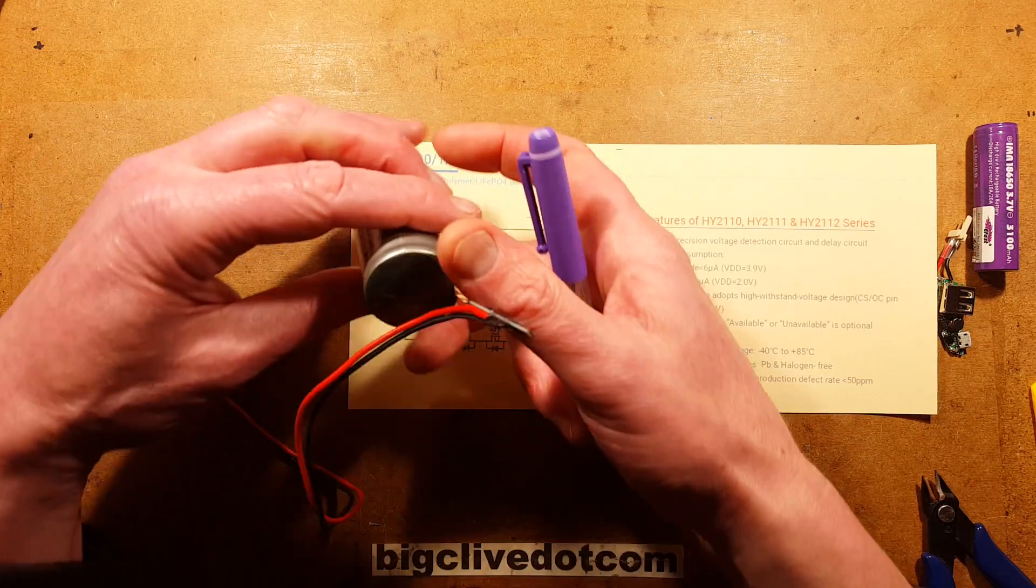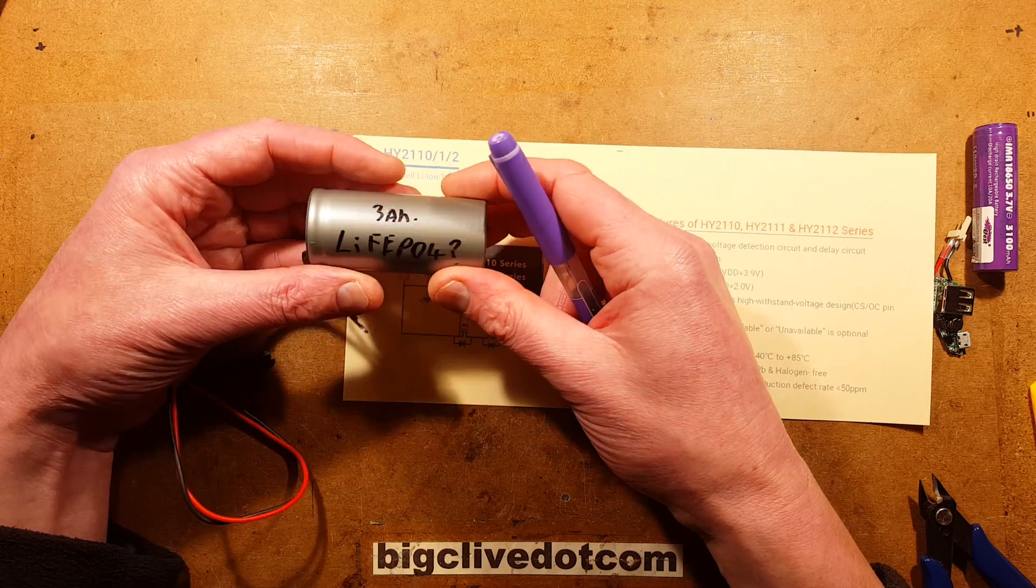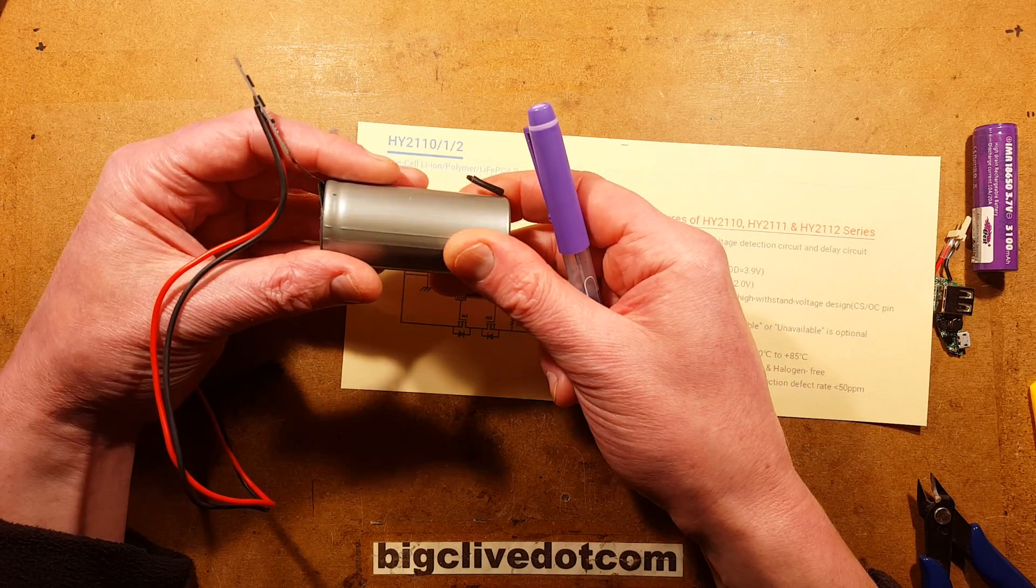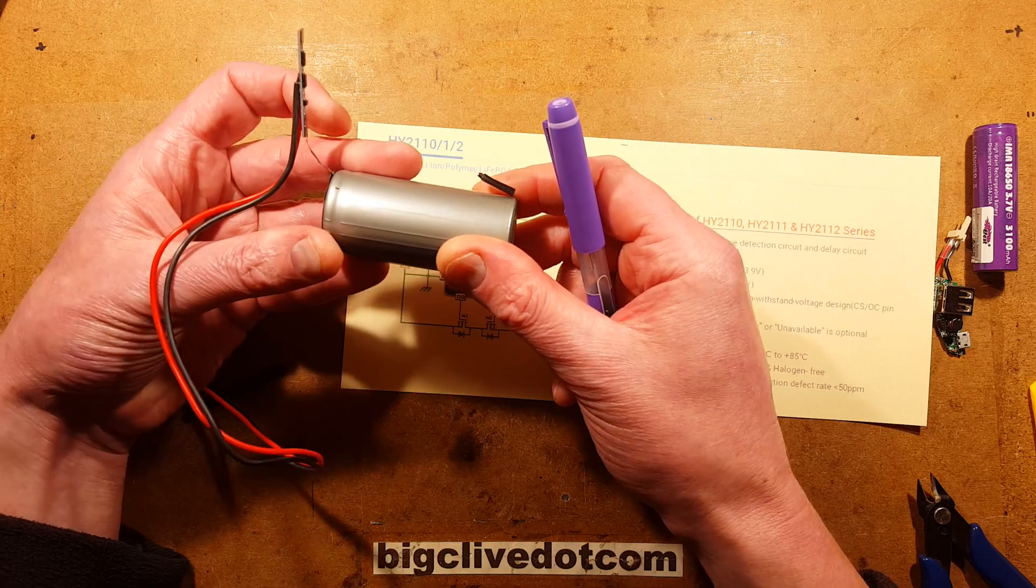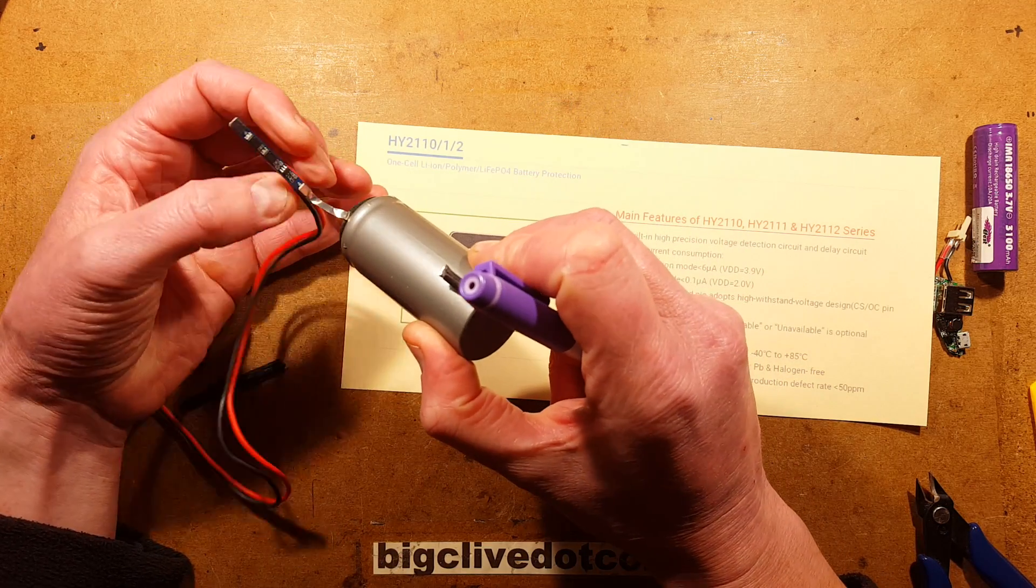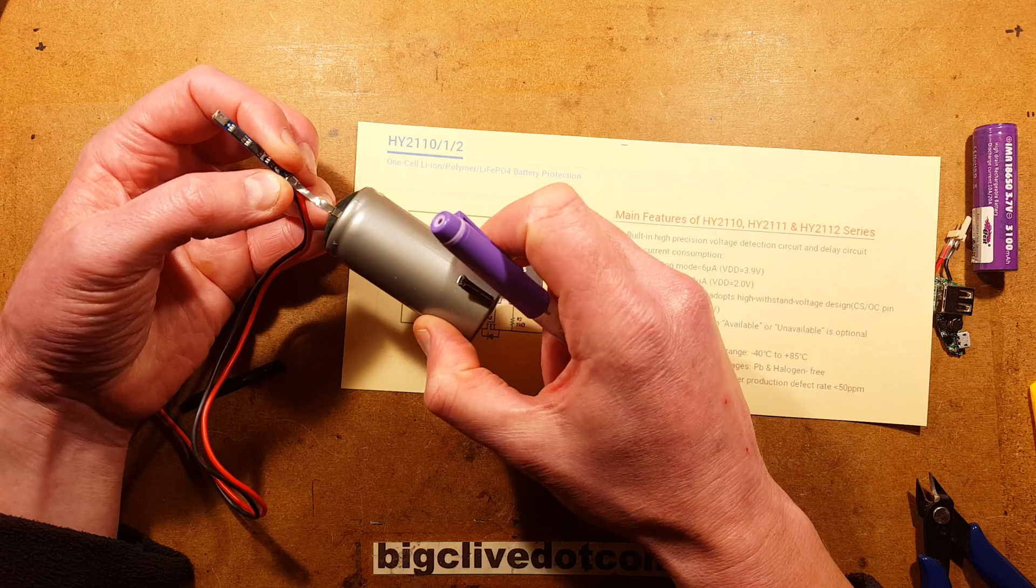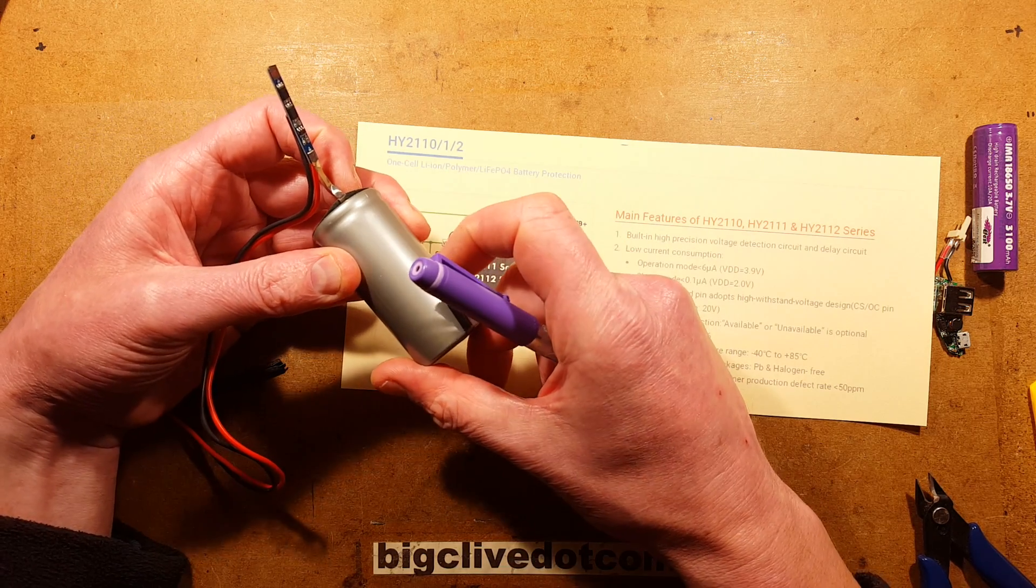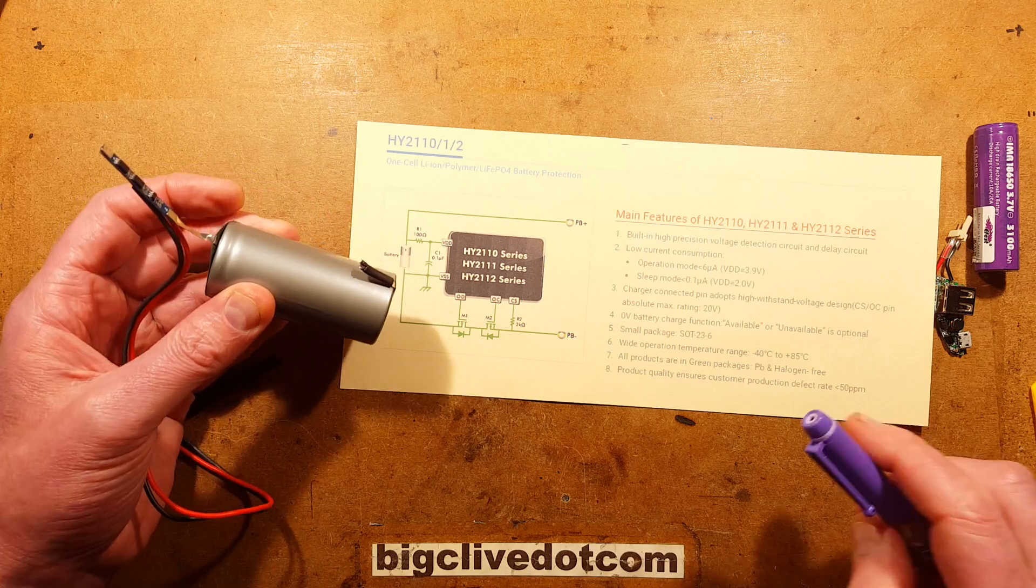So the lithium iron phosphate cell, I'm going to have to play about with this. This is quite interesting. It is that much more stable, long-life technology with that little extra protection board on it as well for charge and over-discharge protection. So that's going to be quite useful, particularly given how long these last. That's going to be well worth playing about with.